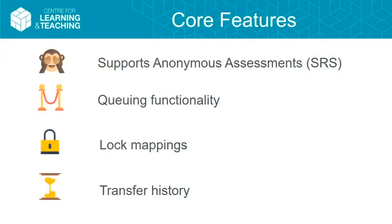The functionalities of this plugin include support for anonymous assessments — which does not mean blind marking, but if an assessment is anonymous in the student record system, we get the candidate number behind the scenes and send that through Moodle, so we don't need to know which student it belongs to but it still goes anonymously into SAMIS or SITS. We also have a queuing functionality: instead of sending grades ad hoc at that point, we queue them in an ad hoc task, which is a Moodle API.